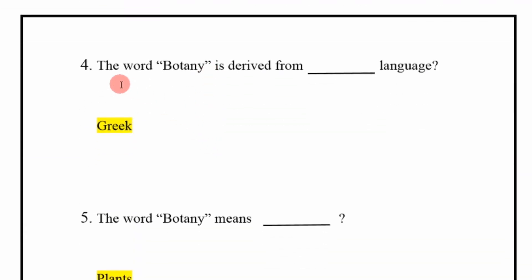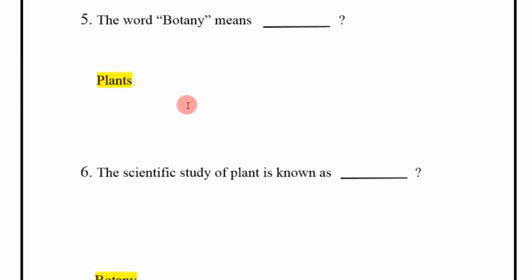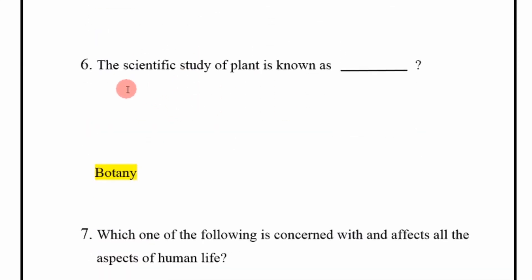The word botany is derived from which language? Answer: Greek. The word botany means what? Answer: Plants. The scientific study of plants is known as? Answer: Botany.